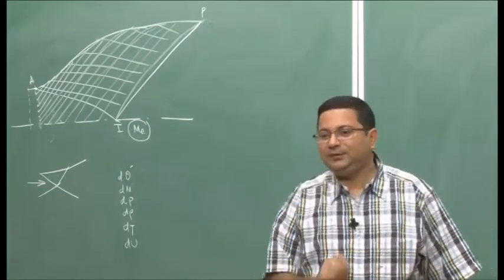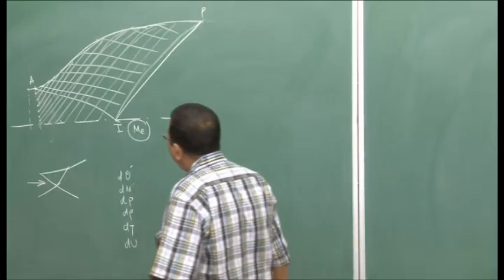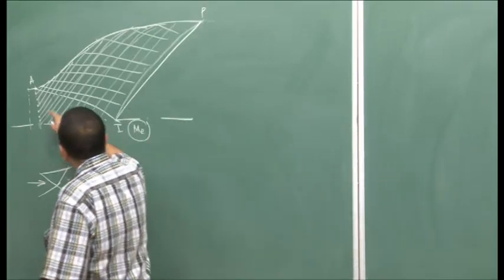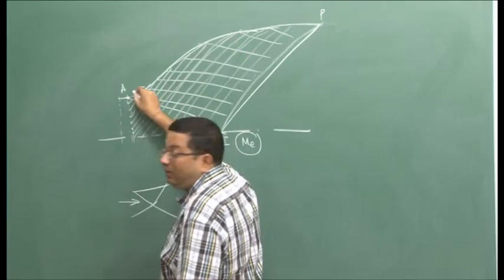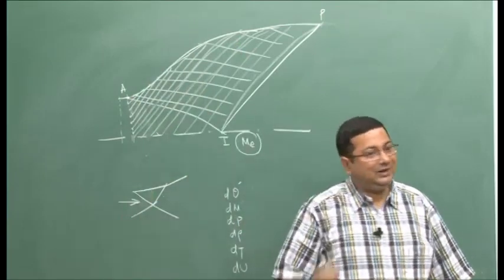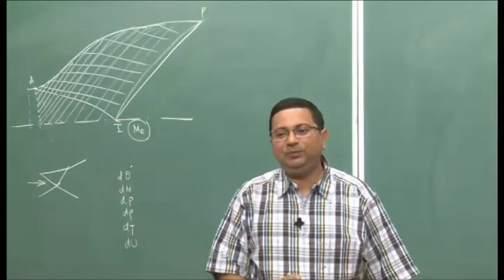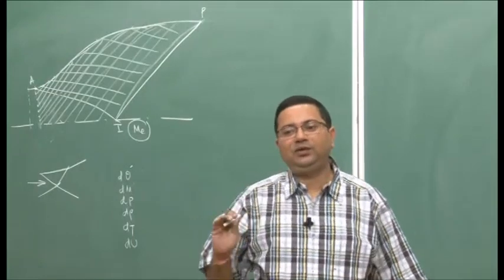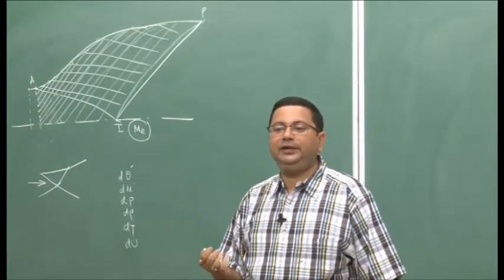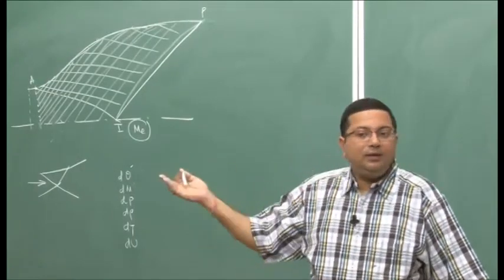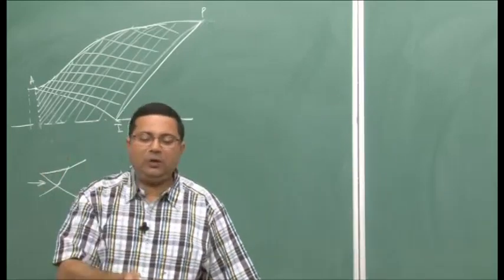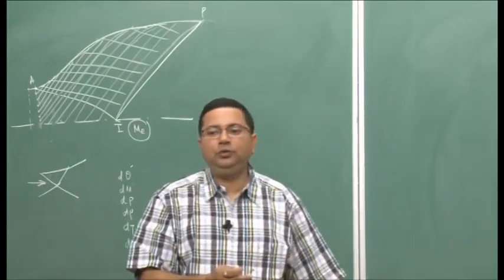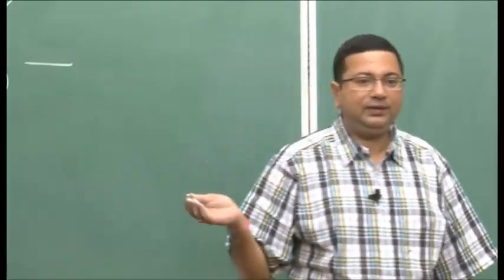Why do I call it an initial guess? Because along this streamline — and this is a streamline, not a wall — we have a velocity. But in reality, all fluids are viscous; there is some viscosity. So at the wall, the flow has to satisfy the no-slip boundary condition. We cannot have a slip boundary condition in this case.